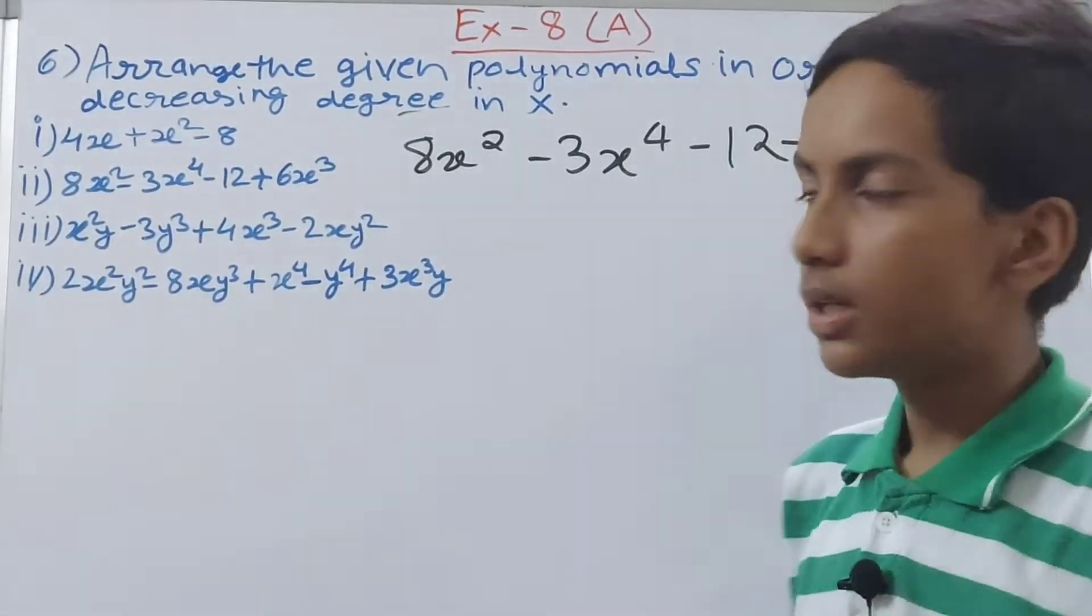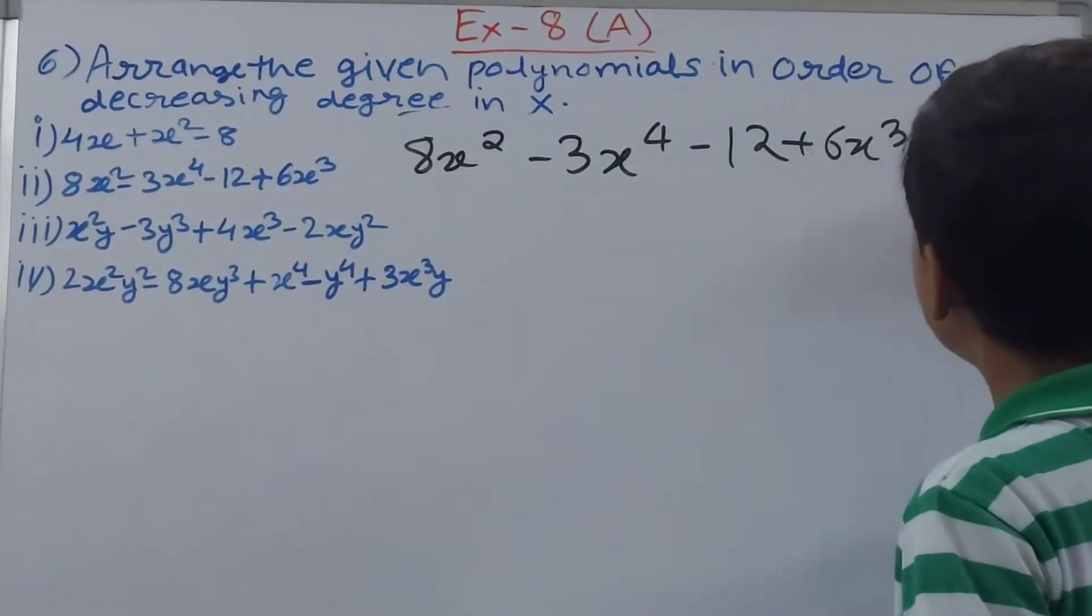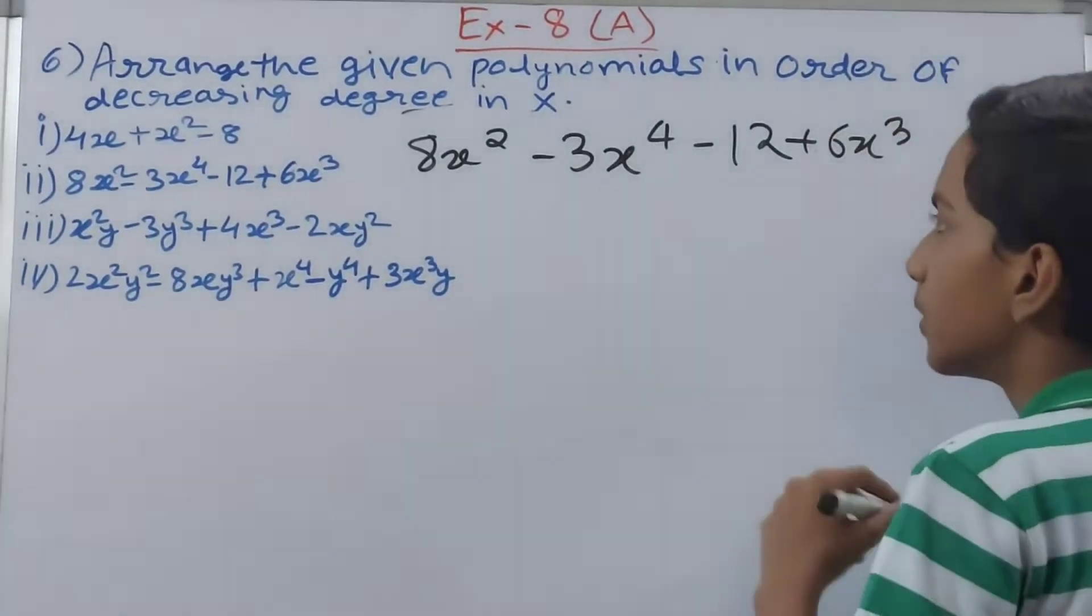Here the degree is 4, here there is no variable in minus 12 so degree becomes 0. Here 6x cube, so degree is 3. These are the four, three basic degrees we have got.